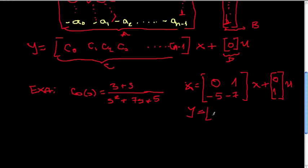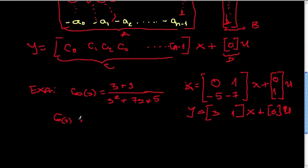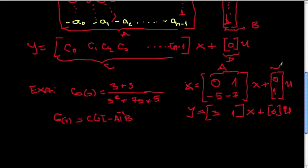Continuing the example: y = [3, 1] x + [0] u. One can easily verify that computing G(s) = C(sI − A)⁻¹B using these A, B, and C matrices — with D obviously equal to zero — will recover the original transfer function G(s) = (3 + s) / (s² + 7s + 5).